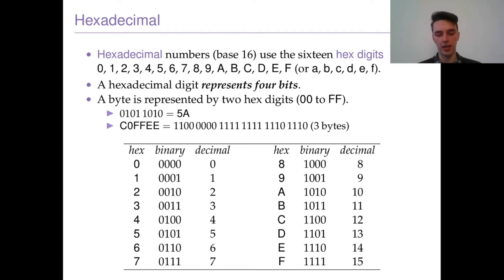COFFEE is a three-byte number, and you can see its binary expansion there. Here's just a little table to give you an idea of how the values compare and that they all have their equivalencies in the different formats: the hex representation, the binary, and then the decimal.